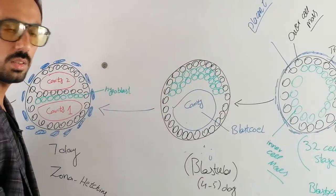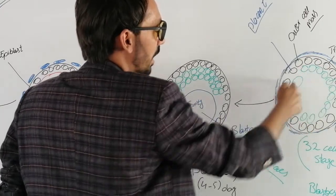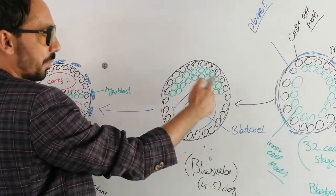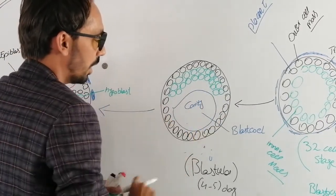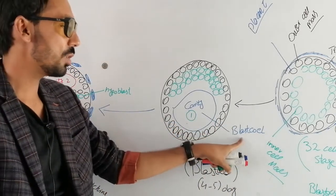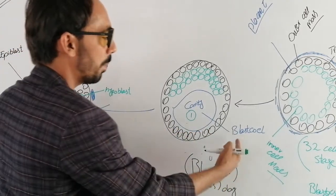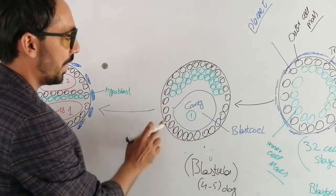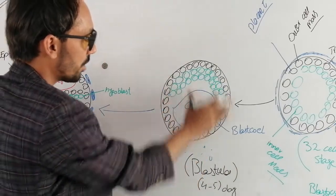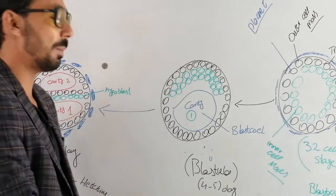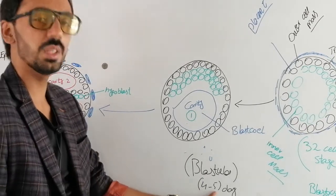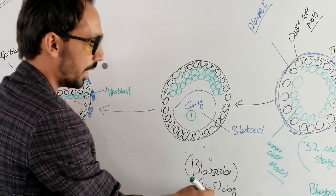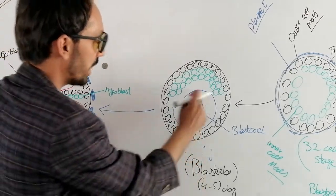At blastocyst stage, all the cells in the center move aside and gather to one side, forming a cavity. This is cavity number 1, and it is called the blastocoele — 'coele' meaning cave or cavity. This formation of the blastula structure occurs at the 4th or 5th day after fertilization. So we have made a single cavity, cavity number 1, called the blastocoele, at the blastula stage after the 4th to 5th day of fertilization.